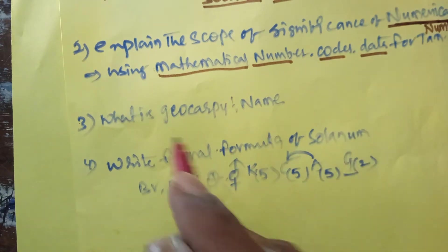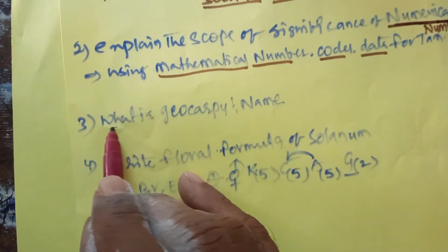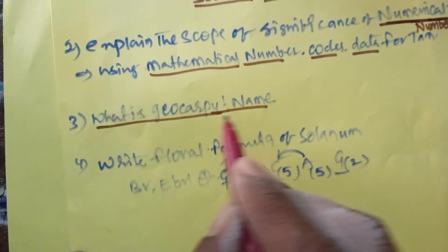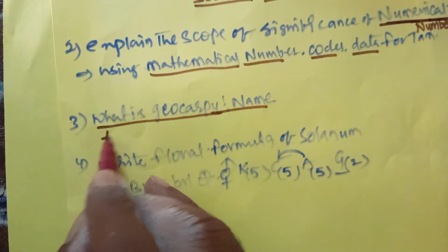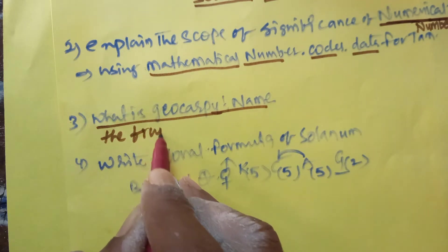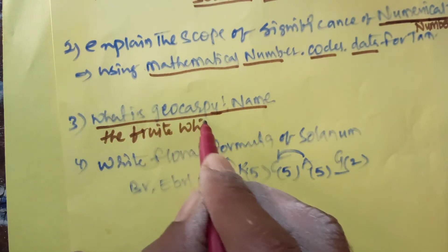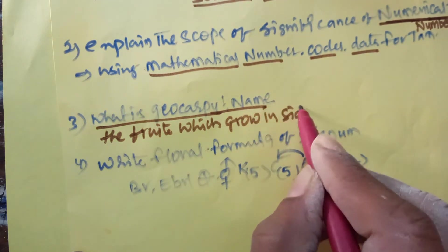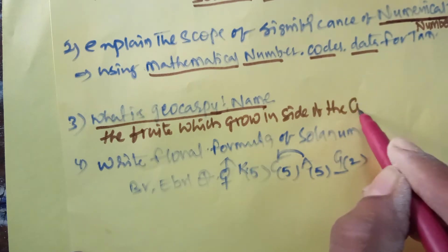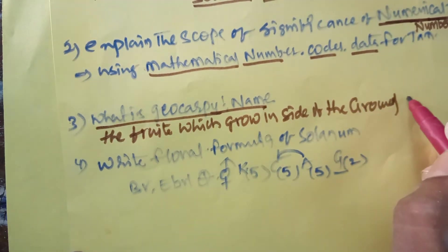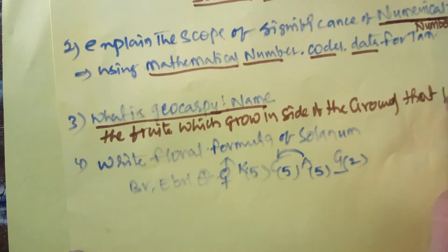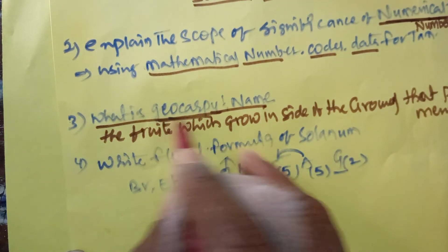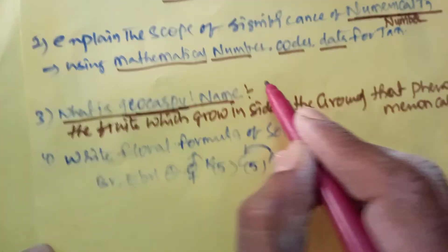Next, come to the third question: what is geocarpy? Geocarpy means the fruit which grows inside the ground. That phenomenon is called as geocarpy. The best example of geocarpy is groundnut.